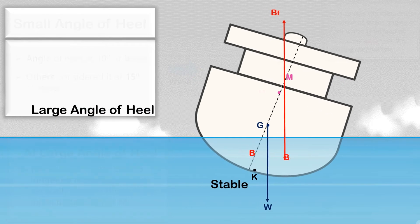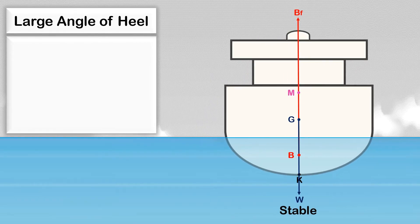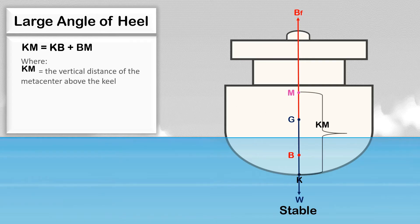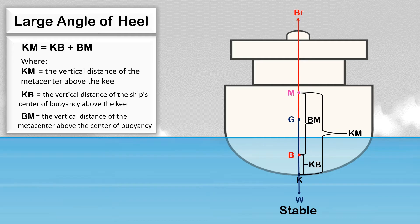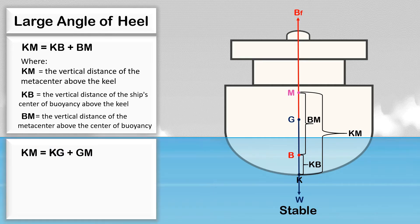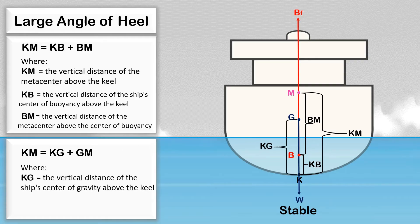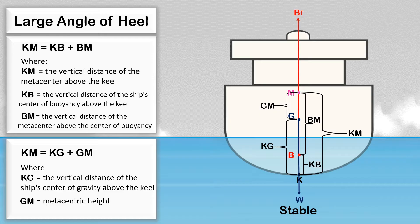The actual location of the metacenter above the keel at a large angle of heel can be found by calculating ship stability using this formula, where KM is the vertical distance of the metacenter above the keel, KB is the vertical distance of the ship's center of buoyancy above the keel, and BM is the vertical distance of the metacenter above the center of buoyancy. You can also use this formula to find KM if the ship is in stable condition, where KG is the vertical distance of the ship's center of gravity above the keel, and GM is the metacentric height. On board, we can determine KM by extracting it from the ship's hydrostatic table provided by the ship's builder.